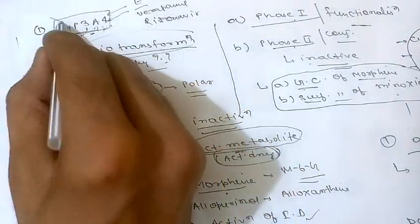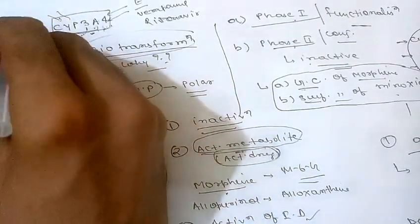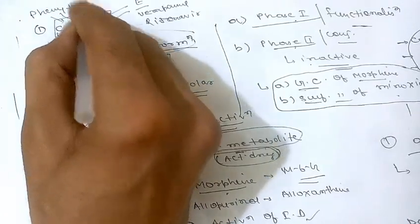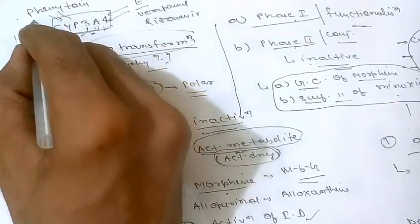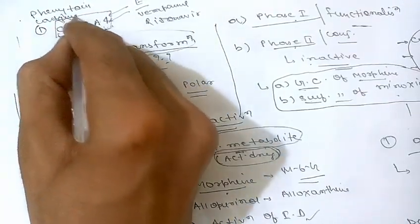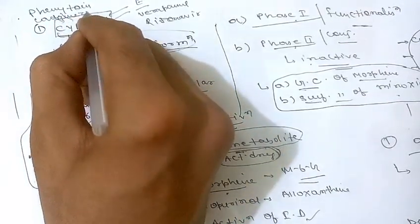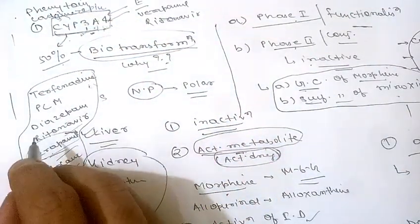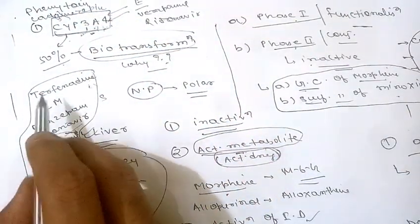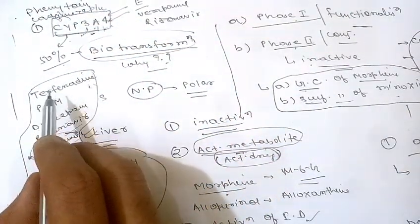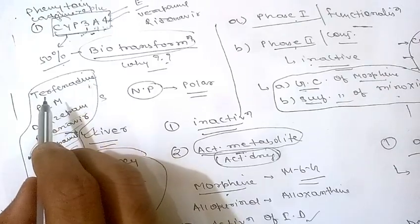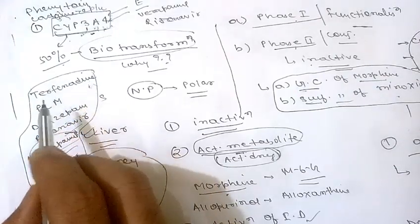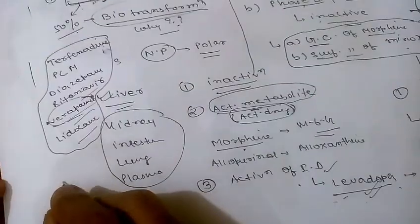Inducers of CYP3A4 include phenytoin, carbamazepine, rifampicin, and glucocorticoids. These are the common inducers for cytochrome CYP3A4.